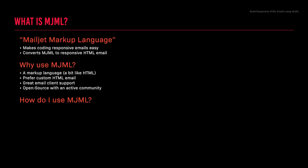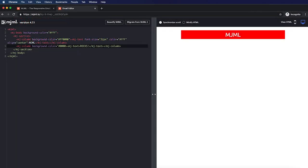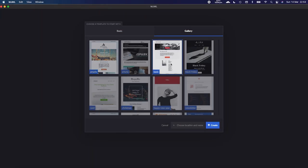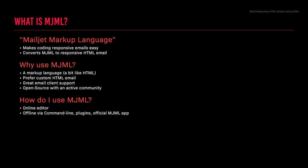How do you use MJML? You could use the online editor — simply visit MJML.io in your web browser and try it live. You can also use it offline: once installed, you can use it via the command line or get a plugin for a popular text editor such as Atom, Sublime Text, or Visual Studio Code. There's also the official MJML app. For this course we'll be using the MJML app and the online editor, and both are free.